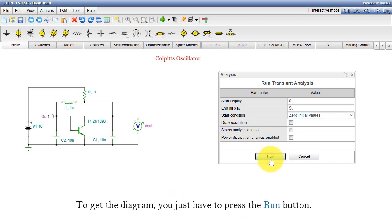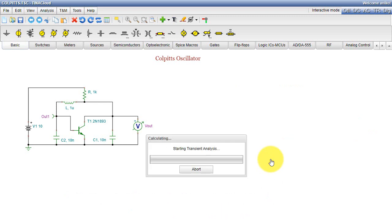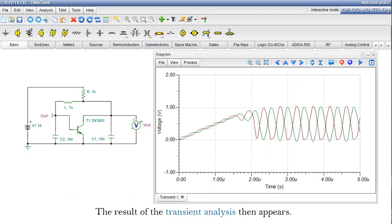To get the diagram, you just have to press the Run button. The result of the transient analysis then appears. You can refine the diagram in several ways. Here are a few.